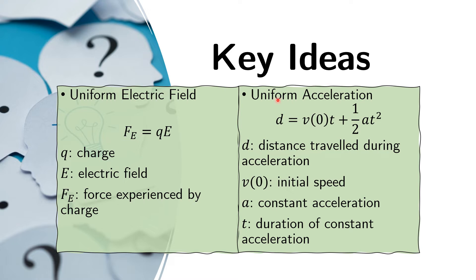Then we also review uniform acceleration. So if you have motion that is uniformly accelerated, that means that the acceleration does not change in the duration of the motion, then we get this relationship. Here we have D as the distance that the body will travel during that motion.